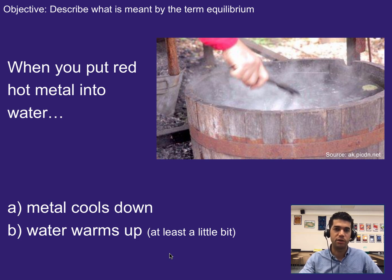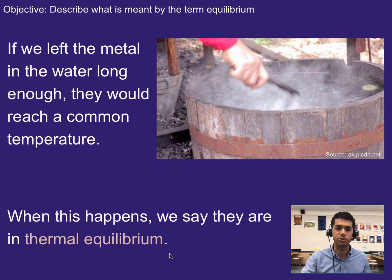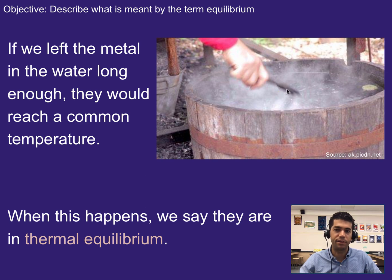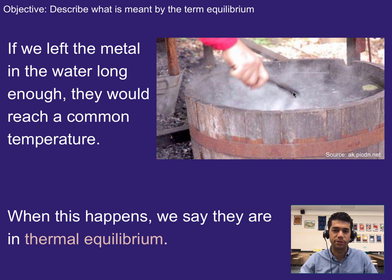When two things are in contact with each other, thermally speaking, and they change temperature until they reach a common temperature, we then say that those two things are in thermal equilibrium. The metal having a higher temperature would essentially give off heat or transfer heat to the water until they reached the same temperature. At that point, there would be no net exchange of heat, meaning that if there is any transfer of heat or thermal energy, there's the same amount going each direction.